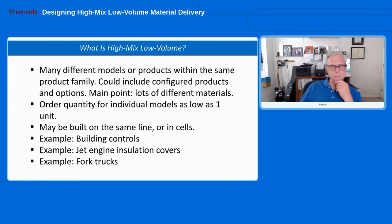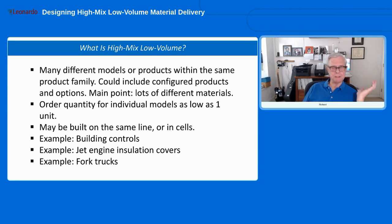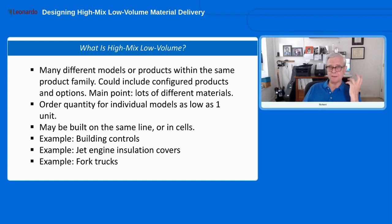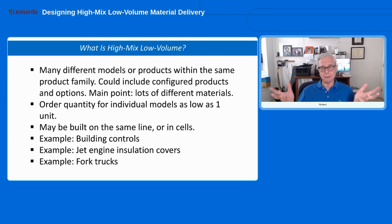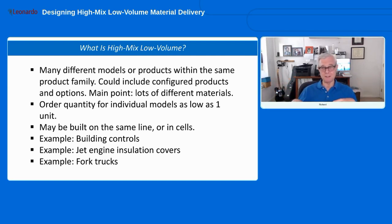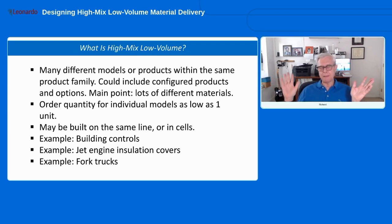Let's start with a simple definition. High-mix low-volume means you have a lot of different products or models within the same family. We're not saying these products are totally different — if two products are totally different, they probably have totally different processes and wouldn't run down the same line. What we're talking about is variation within a family: different work that needs to get done, but fundamentally similar.